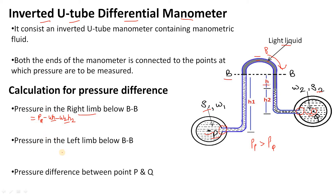Now we calculate the pressure in the left limb. For the left limb, since point P is on the left, I write: PP minus W1·H1. So I have now written the pressure in the right limb and the pressure in the left limb. Now we will use the balance column method and equate equation one and equation two to find the pressure difference between points P and Q.